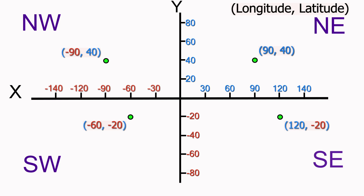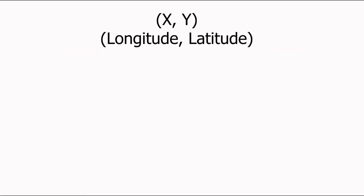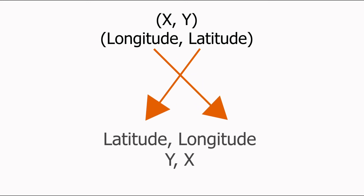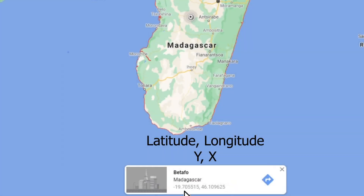Keep in mind that while longitude and latitude are depicted in an X and Y order, you will often see latitude being placed first before longitude in a Y and X order, especially when using something like Google Maps, for instance.